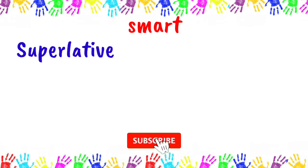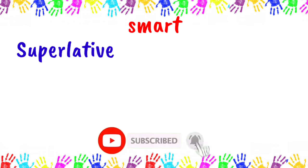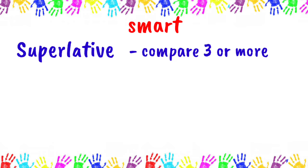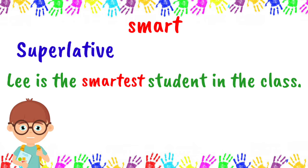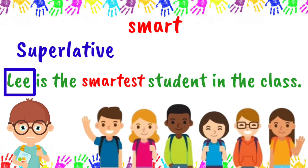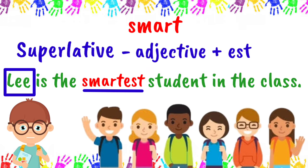Now let us see what happens to the adjective 'smart' when it is used to compare three or more nouns. 'Lee is the smartest student in the class.' In this sentence, Lee is being compared against all other students in the class, and 'smart' became 'smartest.' This is one way of forming the superlative degree — we add EST to it.